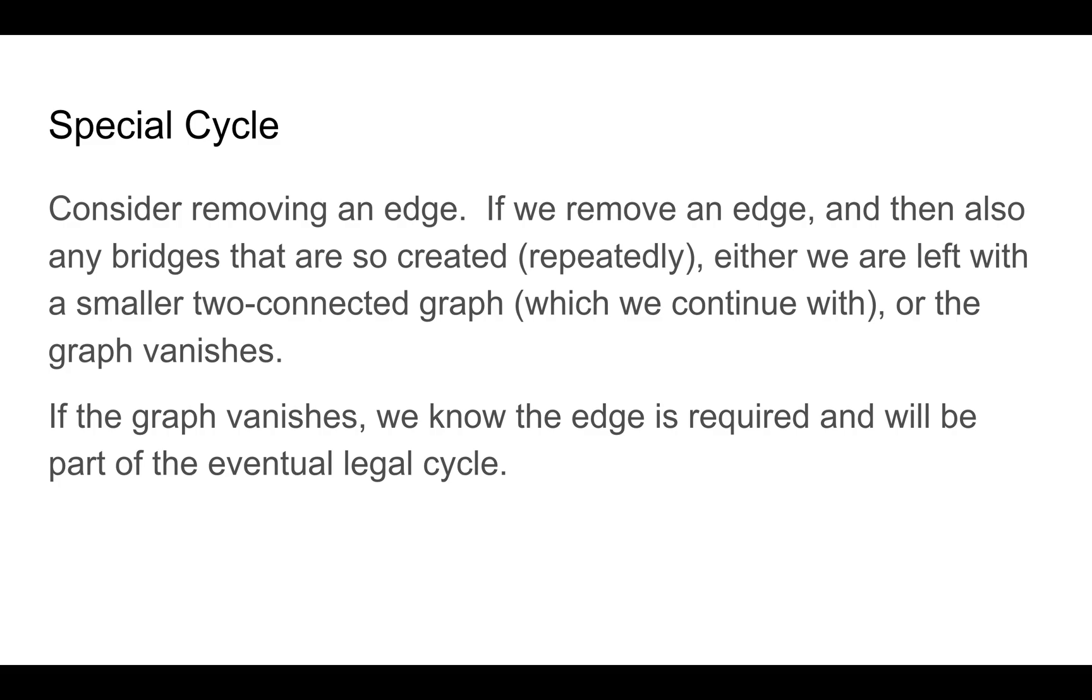Consider removing an edge. If we remove the edge and then we remove any bridges that are so created and iterate until there are no more bridges, either we're left with a smaller two-connected graph, which we can then continue with, or the graph vanishes. If we end with a smaller two-connected graph, because it's two-connected, we know there's going to be a cycle.